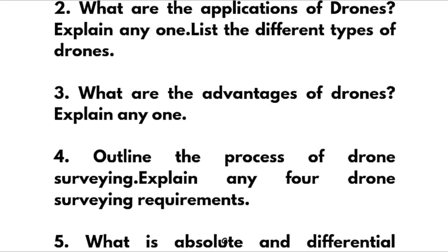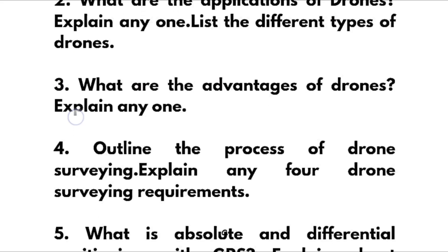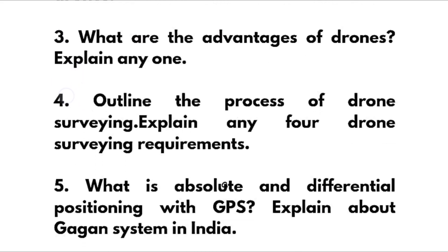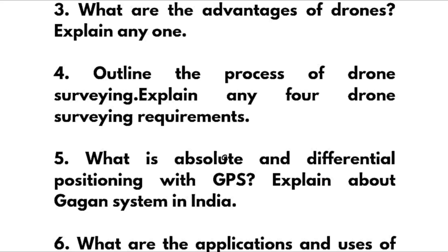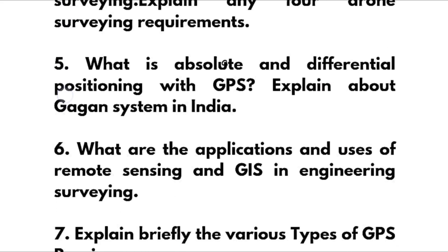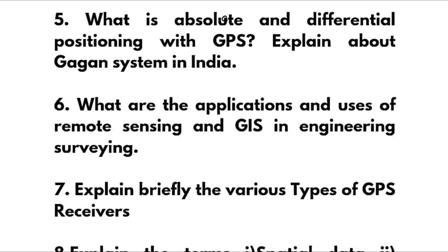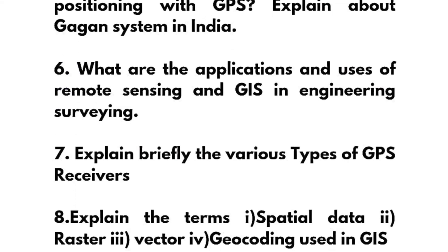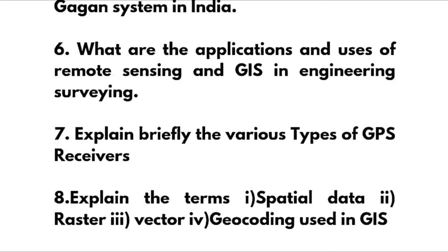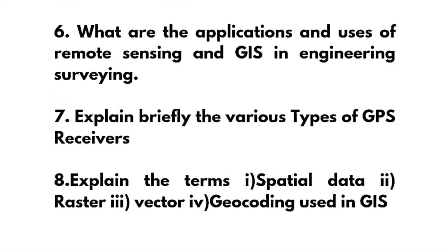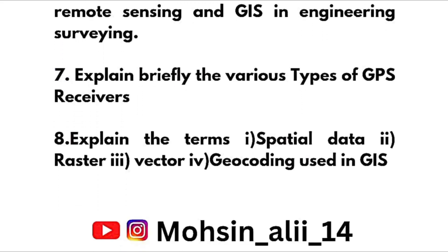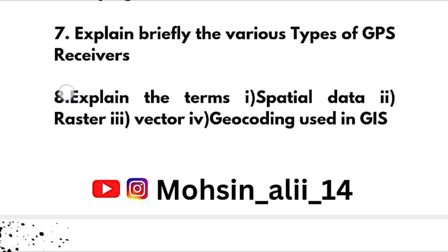The next passing module is Module 5. Questions include: List the GPS errors. What are the applications of drones? List the different types of drones. What are the advantages of drones? Outline the process of drone surveying. Explain any four drone surveying requirements. What is absolute and differential positioning with GPS? Explain about the GAGAN system in India. What are the applications and uses of remote sensing and GIS in engineering surveying?